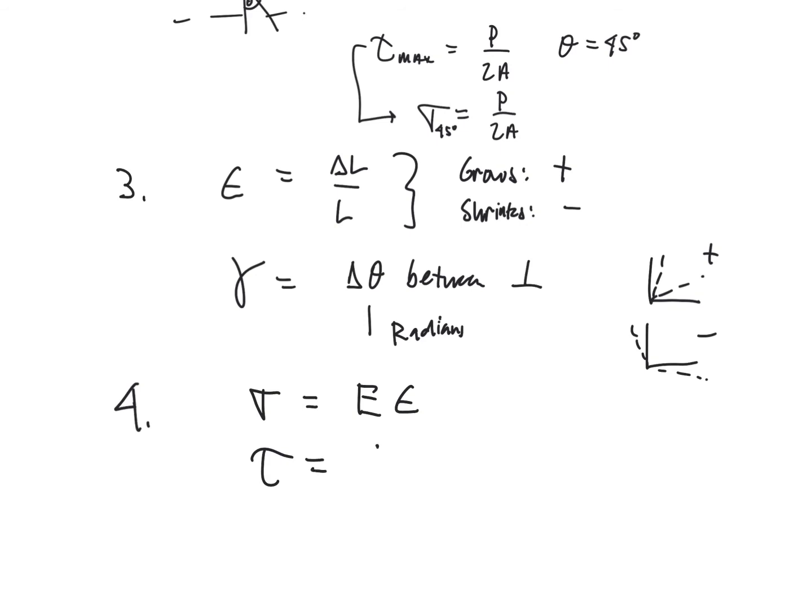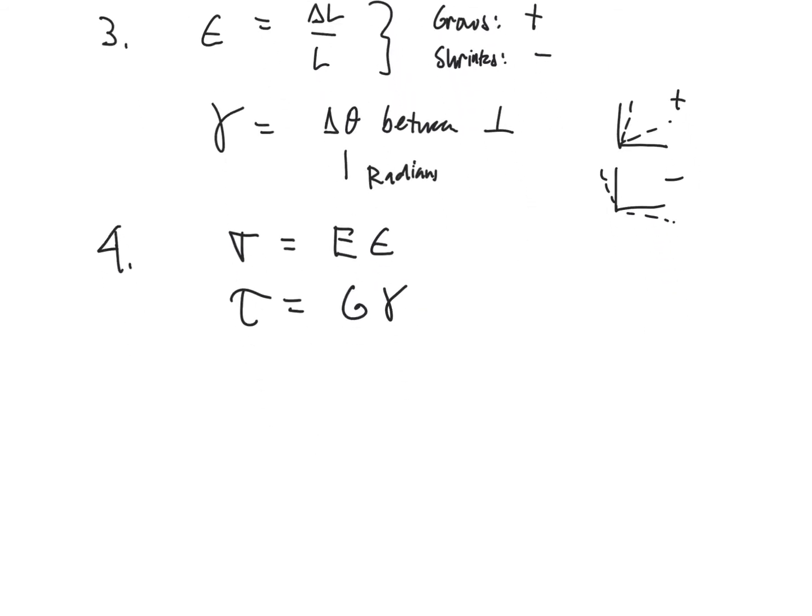And then finally, the Poisson ratio is defined as the negative of the transverse strain divided by the axial strain when there is only an axial stress.